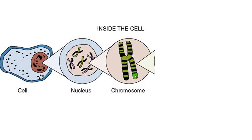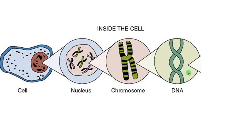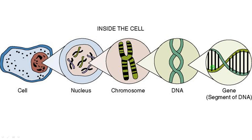A chromosome is made up of DNA that is wrapped around proteins called histones — it is a nuclear protein complex. This is the double helical DNA that stores genetic information. A part of DNA, or a segment of DNA, that codes for a functional protein or determines a character is called a gene.